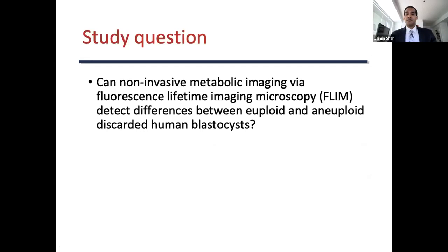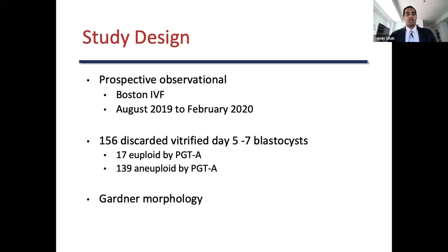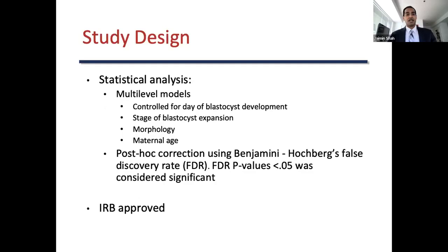In my present study, I investigated if non-invasive metabolic imaging via FLIM can detect differences between euploid and aneuploid discarded human blastocysts. This was a prospective observational study performed at Boston IVF from August 2019 to February 2020. We had 156 discarded vitrified day 5 to 7 blastocysts, of which 17 were euploid and 139 were aneuploid by PGTA, and we utilized Gardner morphology. For statistical analysis, we used multi-level modeling, controlling for day of blastocyst development, stage of blastocyst expansion, morphology, and maternal age, with a post-hoc Hochberg's false discovery rate correction, p-value less than 0.05 considered significant.